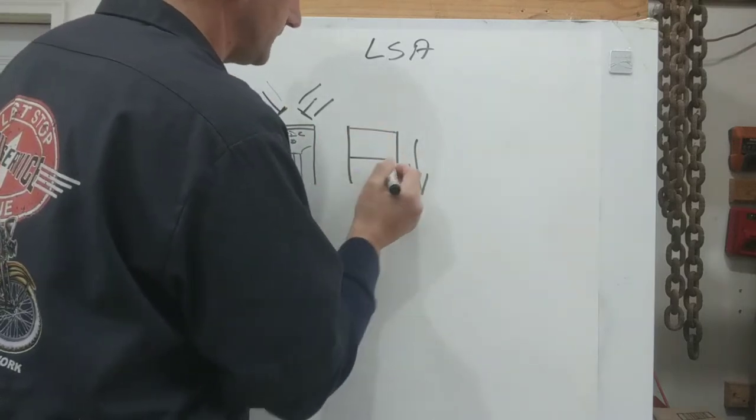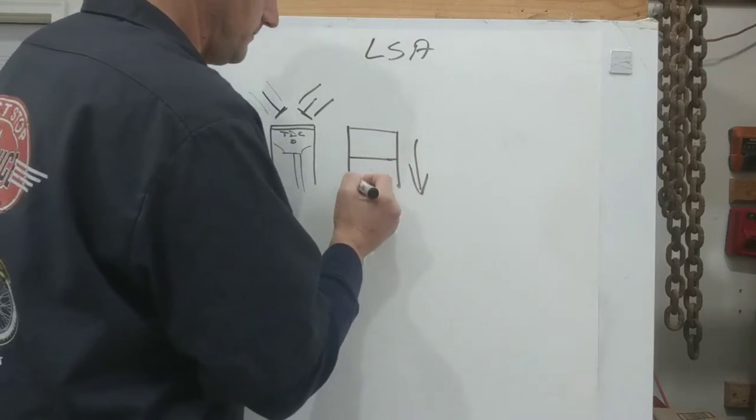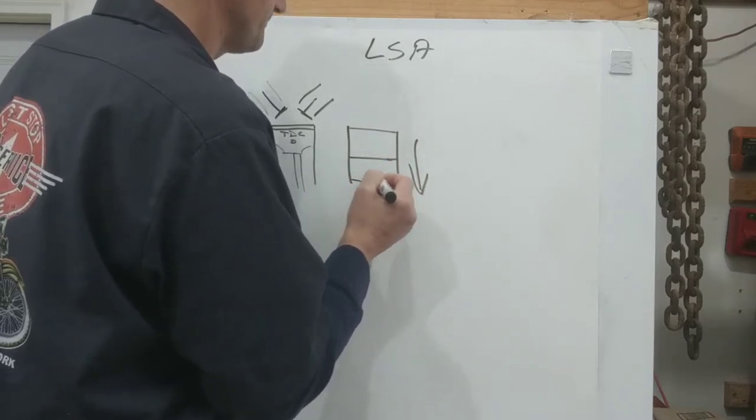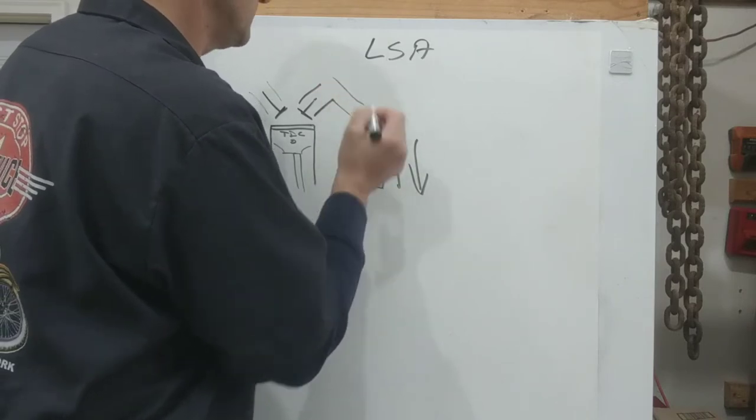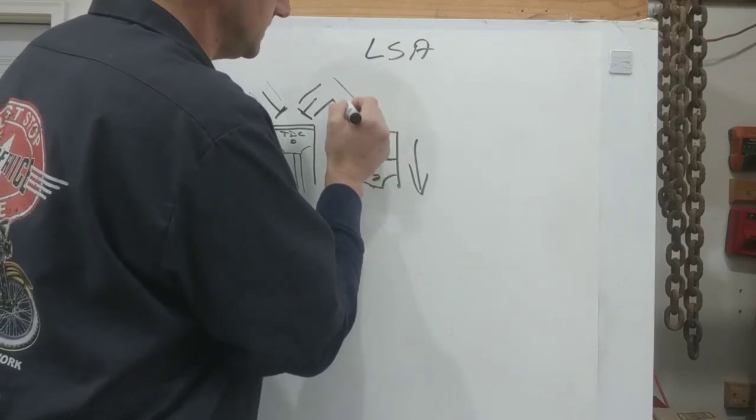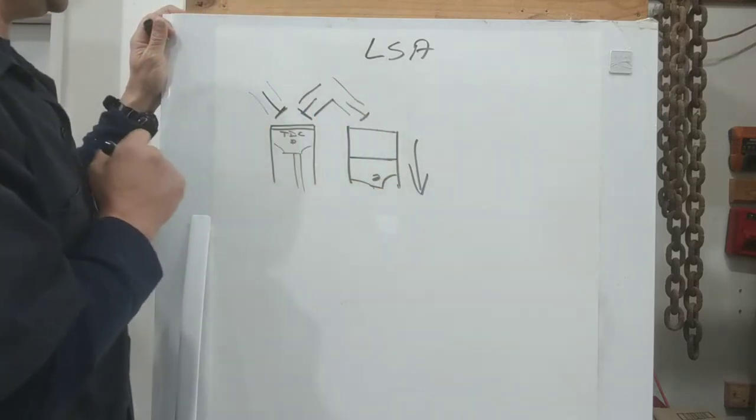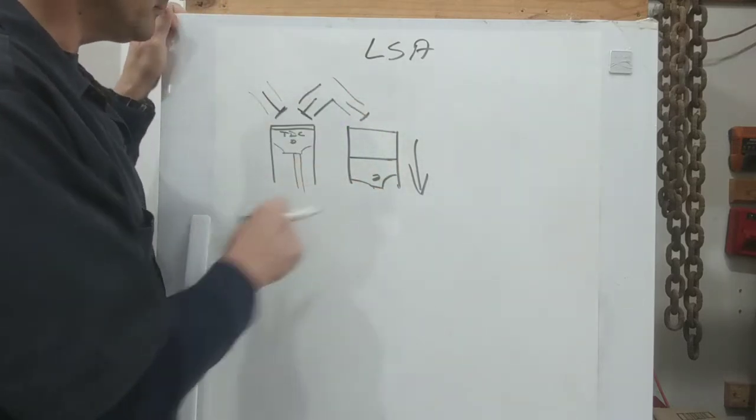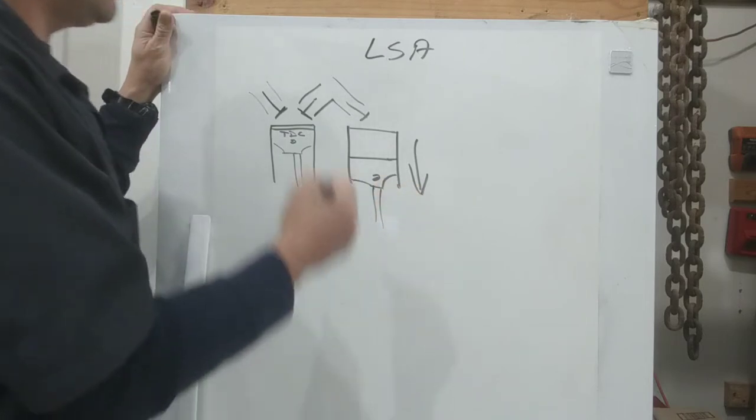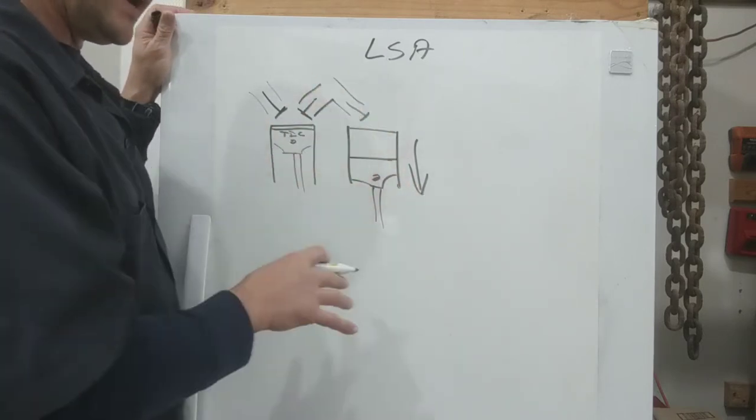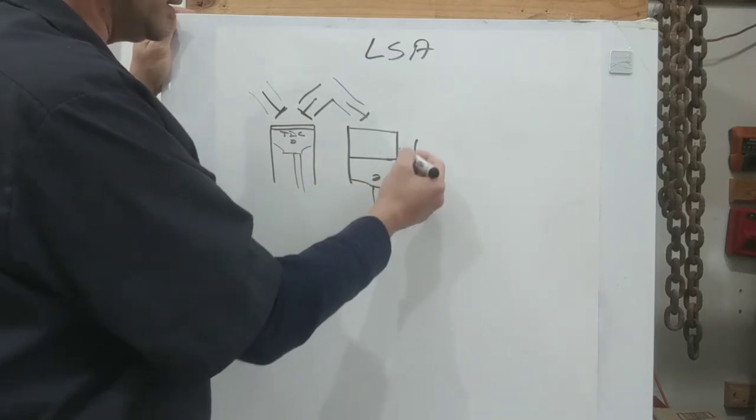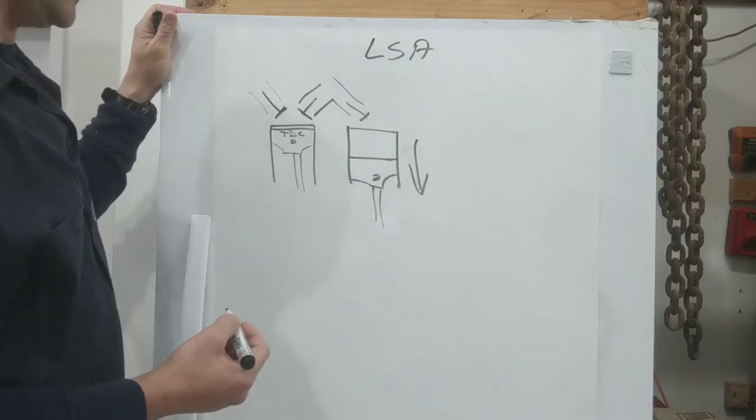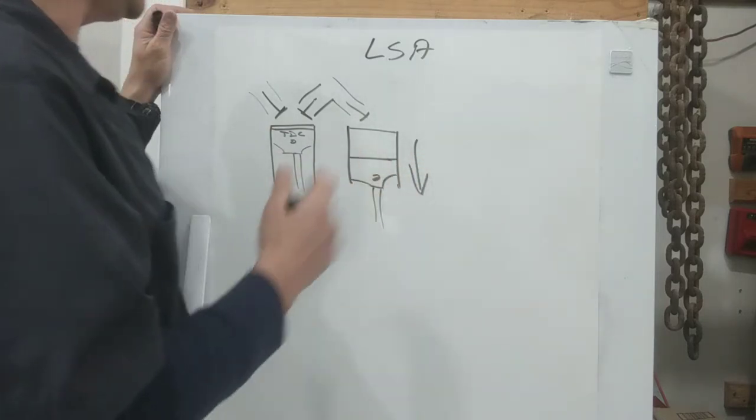And not only is it traveling down or descending in the bore while it has the intake valve open, it's also in the fastest part of the cylinder. Because remember when you have an engine with a common manifold, this intake valve is open, air is traveling in, piston's going down.